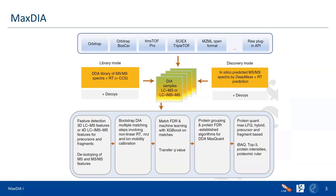MaxQuant, which was so far only known for processing data dependent acquisition data, is now able to deal with data independent acquisition. We are really aiming at being broad in terms of the data we can process. Currently supported is Orbitrap data, and also the special boxcar acquisition scheme discussed in Christoph's talk.